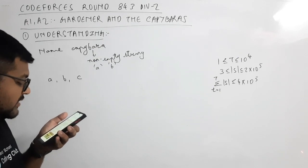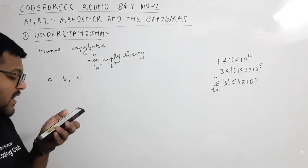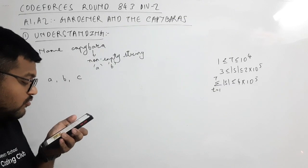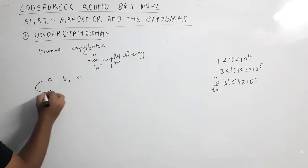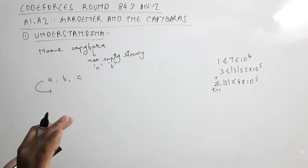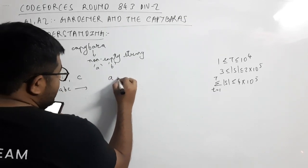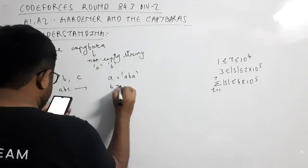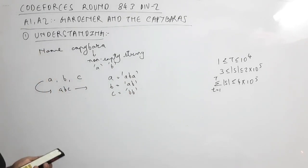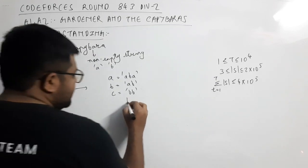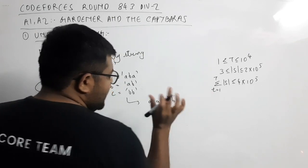Kashmir wrote the non-empty strings A, B, and C in a row without spaces. For example, if capybara A's name was 'ABA', B's name was 'AB', and C's name was 'BB', then the string the gardener wrote down would look like 'ABAABBB', where 'ABA' is A, 'AB' is B, and 'BB' is C.